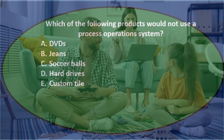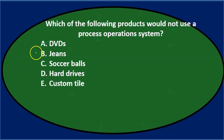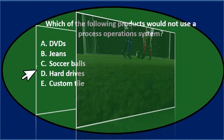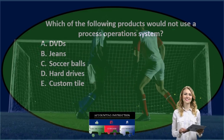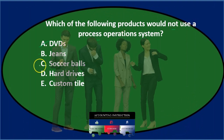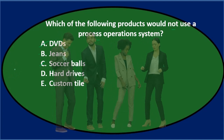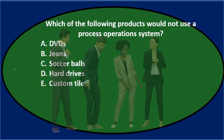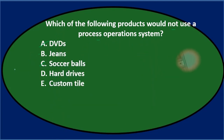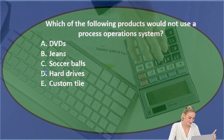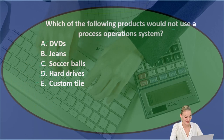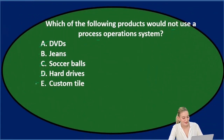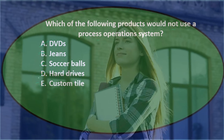Jeans sound a little more complex — and there are custom jeans these days — so I'll keep that one for now. Soccer balls seem pretty standardized; I'd think a machine can basically crank out soccer balls, so that's a process cost system. Hard drives are also something assembled with very little manual customization typically needed, so I'd say no on the hard drive as well.